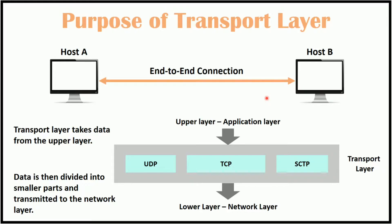There are five layers in the TCP/IP model: application layer, transport layer, network layer, data link layer, and physical layer. The transport layer has the critical role of providing peer-to-peer and end-to-end communication services directly to the application processes running on different hosts. It creates 65,000 ports on a computer so that multiple applications can run at the same time. The transport layer takes data from the upper layer, divides it into small parts, and then transmits it to the lower layers using protocols such as TCP and UDP.